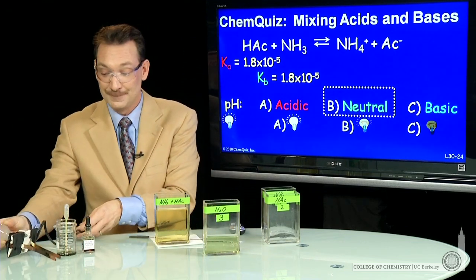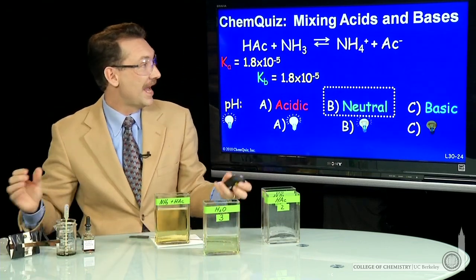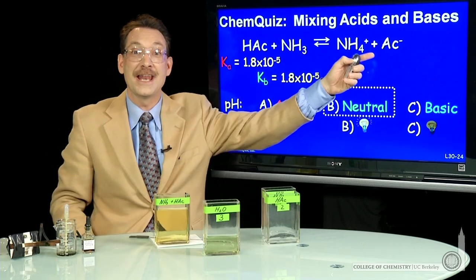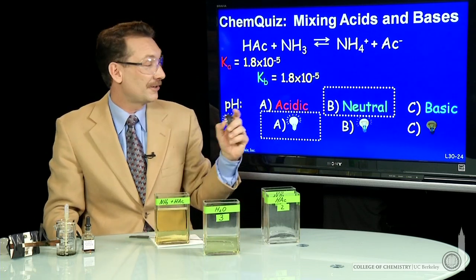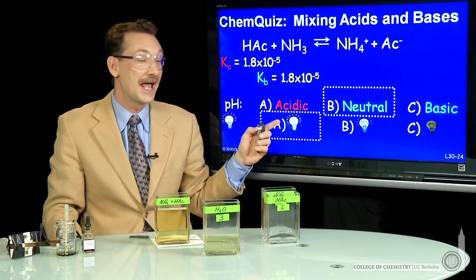So in this case, I have NH4 plus and AC minus ions in high concentration. The correct answer here is neutral and bright light.